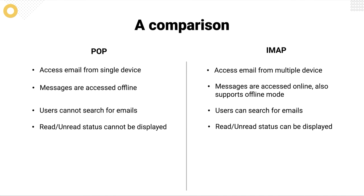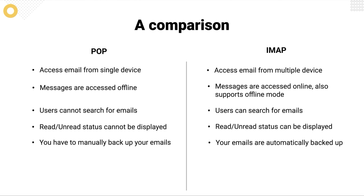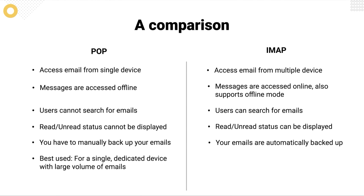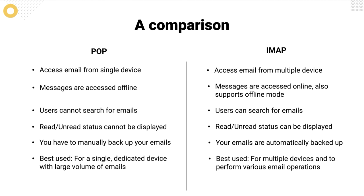With POP, you have to manually back up all of your emails. With IMAP, your emails are automatically backed up. POP is best used by users who have a single, dedicated system with a large volume of emails. IMAP is best used by users who work with multiple devices and need to perform various email operations.